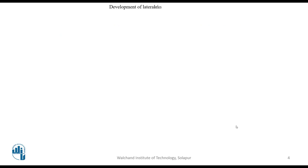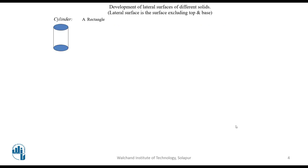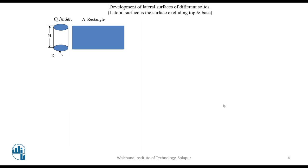Here we are going to consider one by one the development of the given solids. There are two major categories: the first category is the parallel line method, where we consider cylinders as well as prisms. We will first study the cylinder.